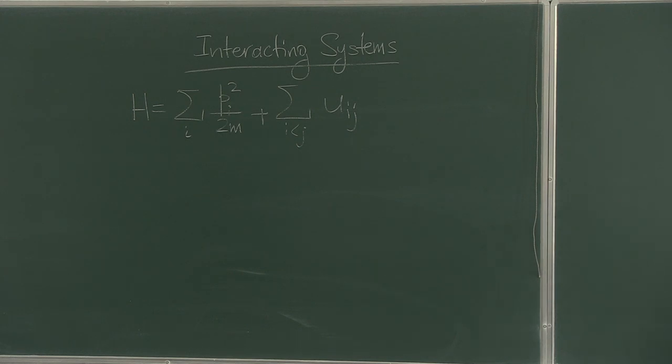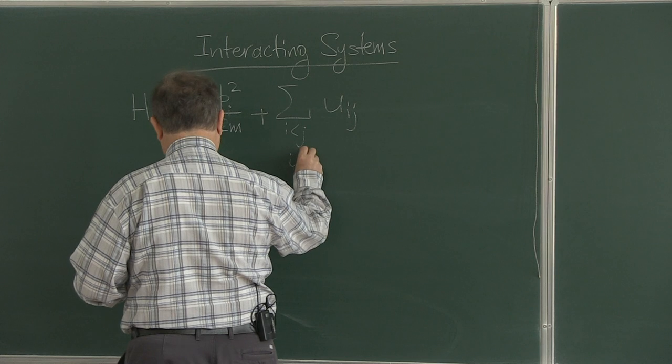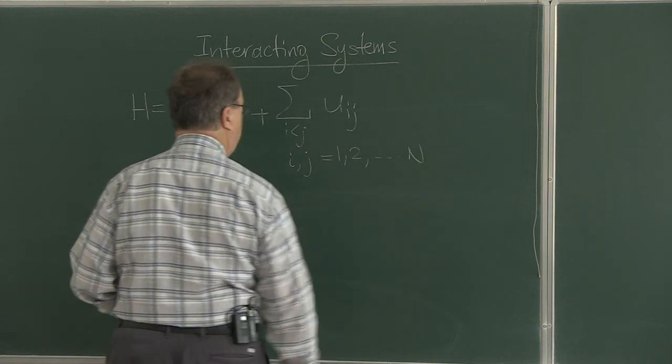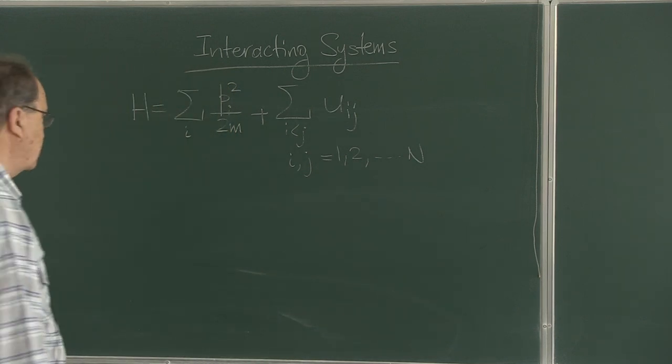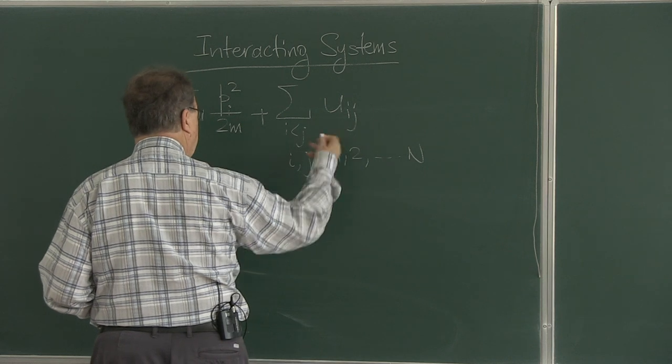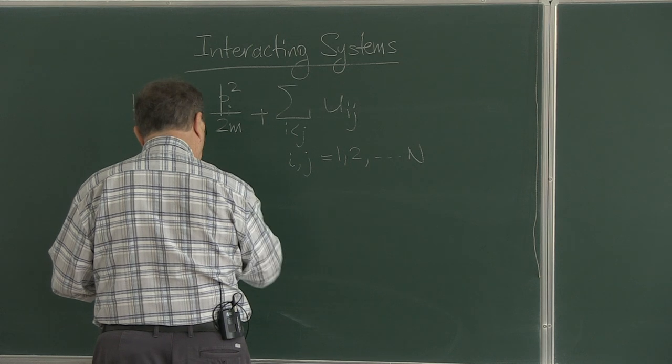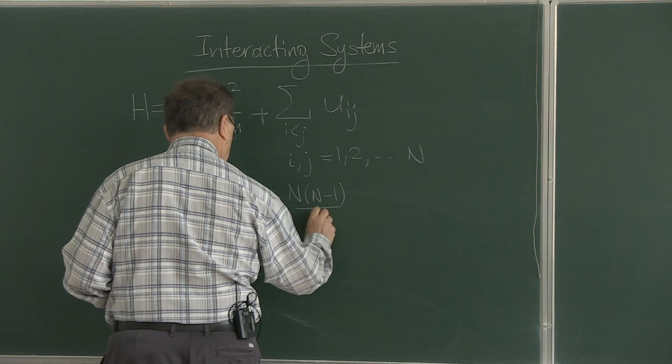This is a correct way of writing to prevent the double counting of interactions. Here, i and j goes up to n. Imagine we have n particles in the system, atoms or molecules. This is a pairwise kind of interaction, and it goes over all n(n-1)/2 pairs.